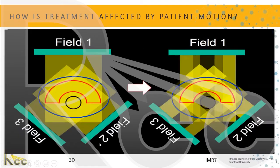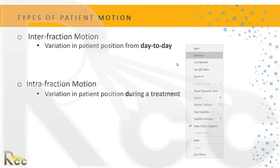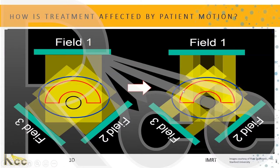With 3D treatment, if the patient moves around, we're going to miss the target. With IMRT, which is even more conformal than a 3D treatment, we're going to really miss the target if the patient moves. We would also treat organs at risk that we don't want to and haven't accounted for — that's the important part.